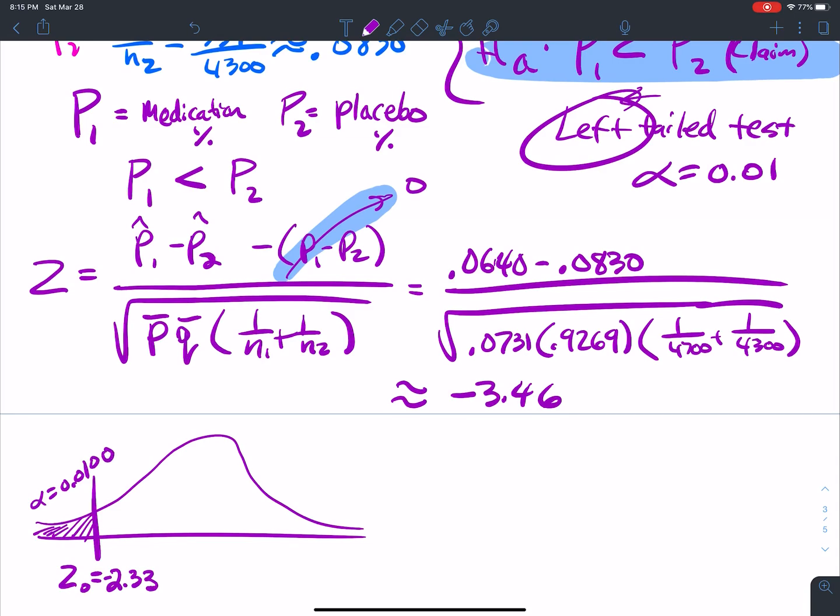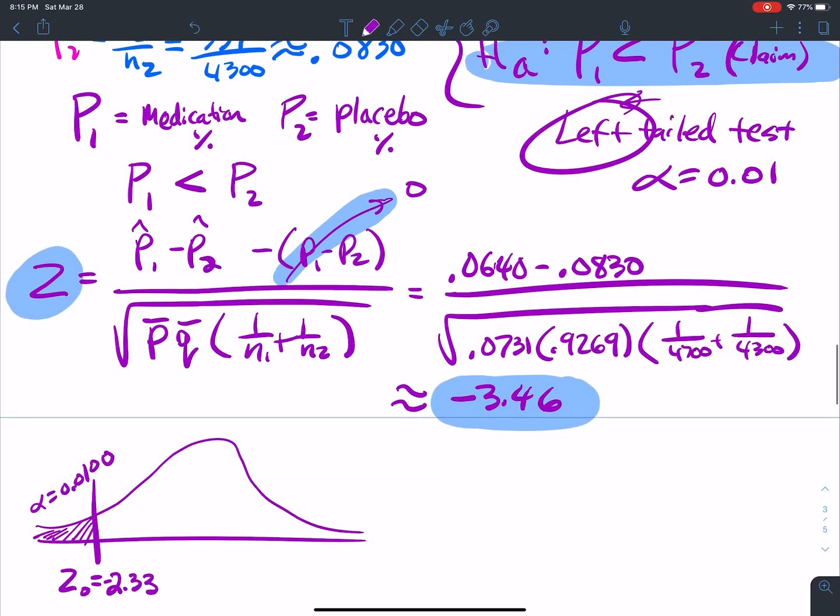So what's my standardized test statistic? It falls over here at z. And my z here, let me move this out of the way. This is negative 3.46.